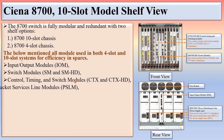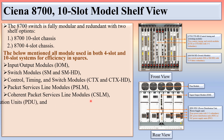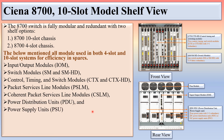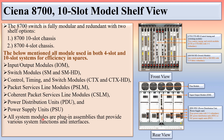Common modules present in both chassis types include: packet service line module (PSLM), coherent packet service line module (CSLM), and power distribution/supply units. All system modules are plug-in assemblies providing various system functions. The key difference is that the 8700 10-slot chassis has 10 traffic slots, while the 8700 4-slot chassis has 4 traffic slots.